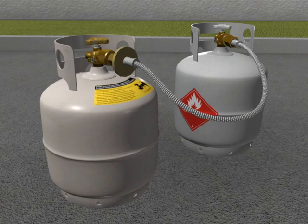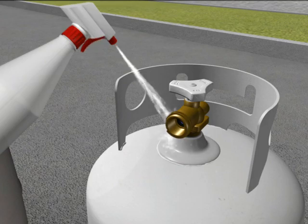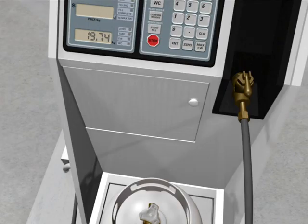Slowly disconnect the decant hose. It will contain LPG pressure. And finally, leak test and weight check the receiving cylinder to make sure you haven't just transferred your problem.